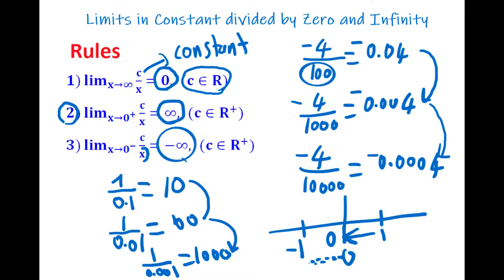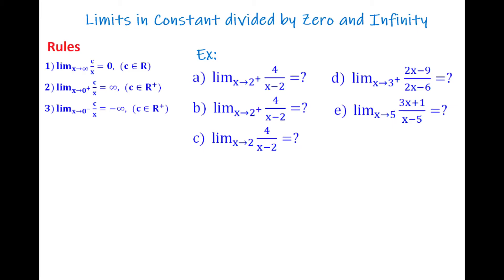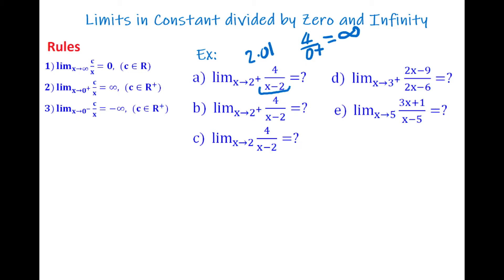Now let's look at the examples. In part a: the limit of 4 divided by (x minus 2) when x goes to 2 from the right side. If you substitute 2, you get 4 divided by 0. Since x approaches 2 from the right — like 2.01 — subtracting 2 gives a positive number. So this is a constant divided by a positive number approaching zero, which gives positive infinity.